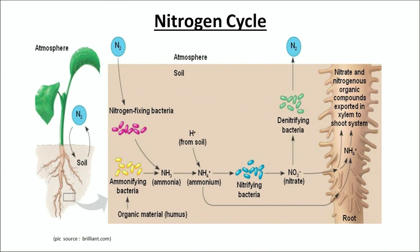Here is the same nitrogen cycle given as different steps, as a recap. Nitrifying bacteria convert nitrogen into ammonium and then into nitrate, which the plant absorbs. The remaining leftover nitrates are acted upon by denitrifying bacteria and converted back to nitrogen. Next we will talk about types of nitrogen fixation.